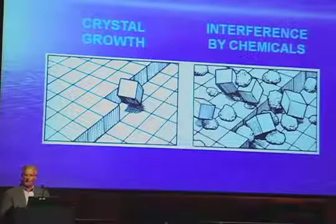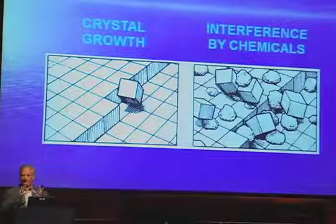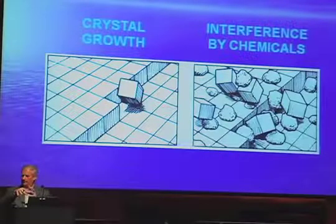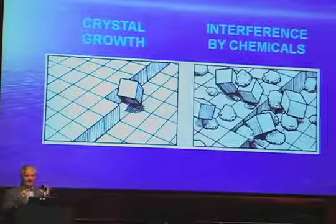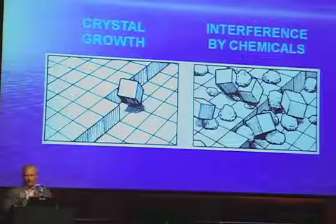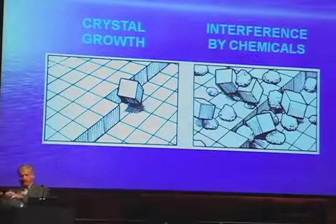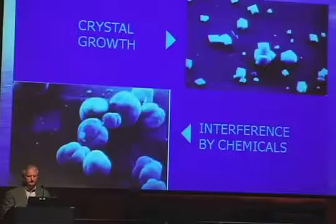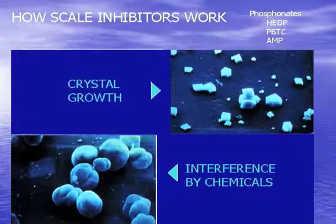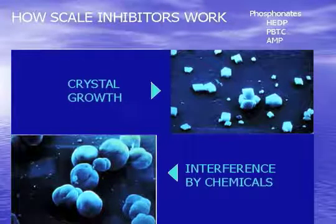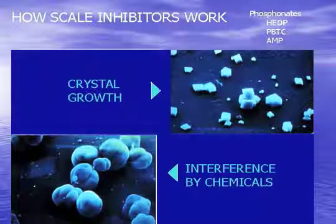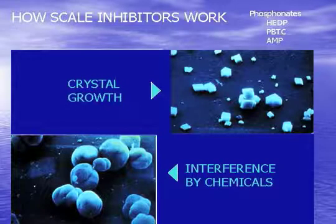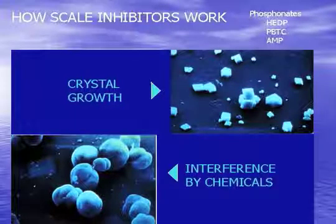What the phosphonates do is they actually modify that scale. So as calcium and carbonate come together, the phosphonates get their finger in there and they modify that crystal. Now it's not an organized crystal anymore. It's trying to find a slot for itself — can't find a slot — and eventually it gets purged out of the blowdown. It's basically a crystal modifier. When you look at it from an electron microscope standpoint, you can see the crystals that are nice cubic shapes, starting to form on top of each other. When you modify them with the phosphonates, you can see how they're all distorted — they really can't form a deposit. They run around the system and eventually either settle out somewhere or go through the blowdown.